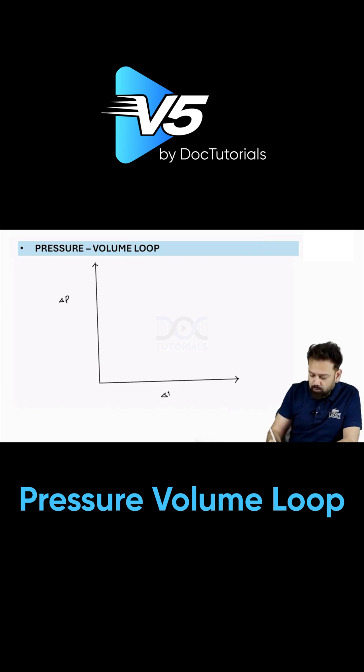Pressure and volume loop curve regarding the ventricle. Now when volume is increasing from point A to point B, let me say A, B, then volume remains constant. Then we can say like this: A, B, C and D.